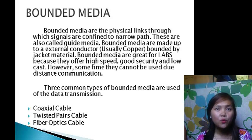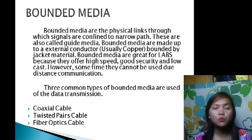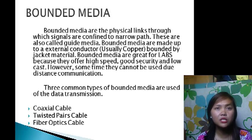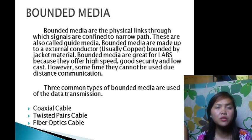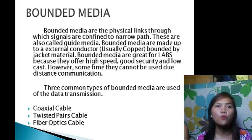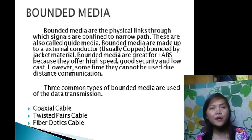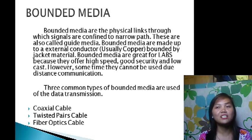Bounded media is made of a conductor, which is usually copper, and is jacketed with insulating material. It provides high speed and is very secure. Its drawback is that it cannot be used for long-distance communication because of the physical infrastructure required. Bounded media has three types: twisted pair cables, fiber optic cables, and coaxial cables.